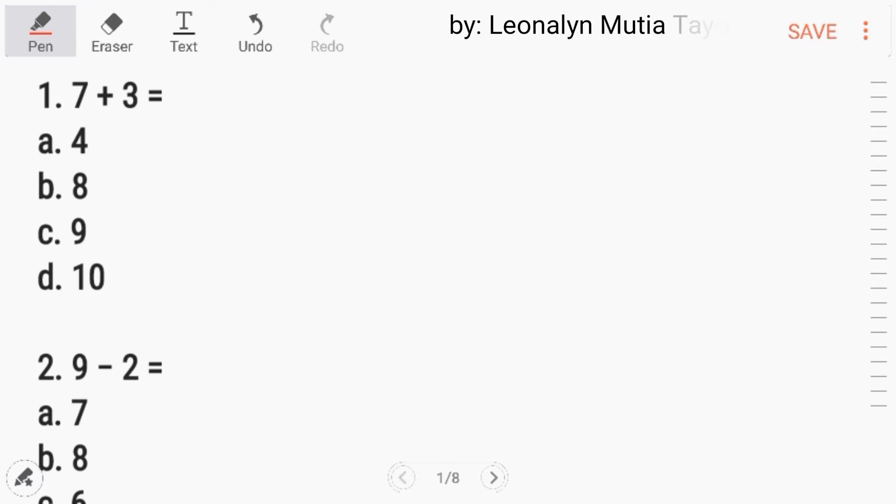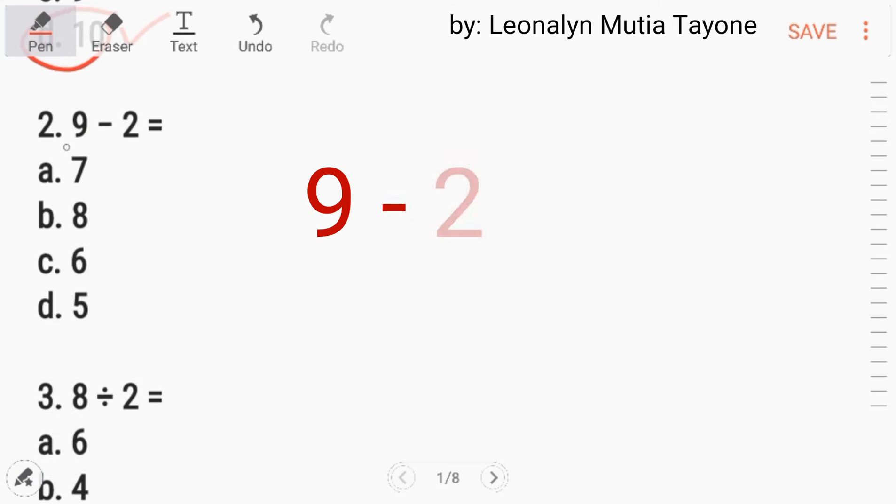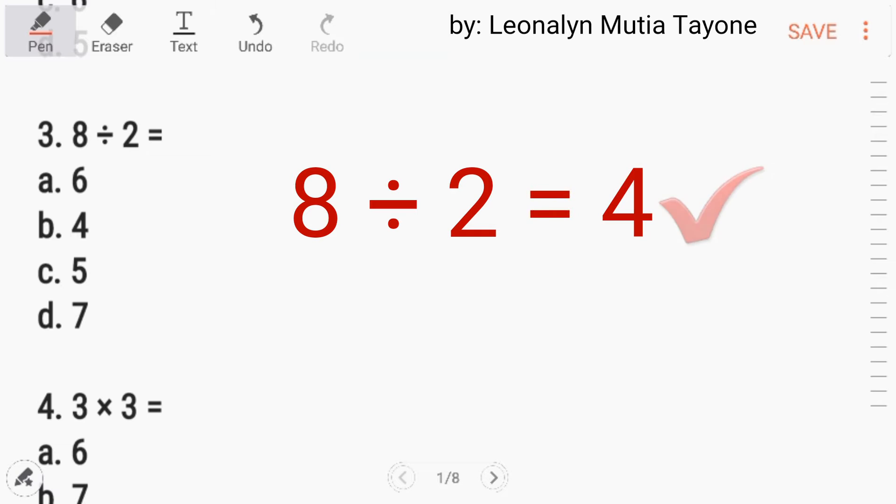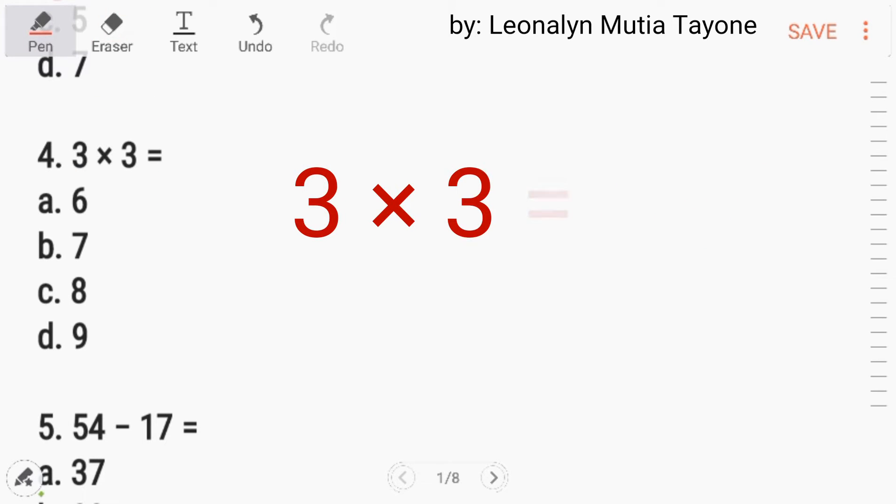Number 1. Let's start basic. 7 plus 3. This is basic addition and the answer is 10. Number 2. 9 minus 2. This is basic subtraction and the answer is 7, Letter A. Number 3. 8 divided by 2. This is basic division and the answer is 4, Letter B. Number 4. 3 times 3 and the answer is 9, Letter D. This is basic multiplication.